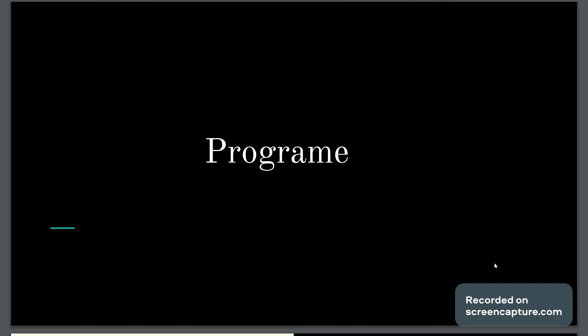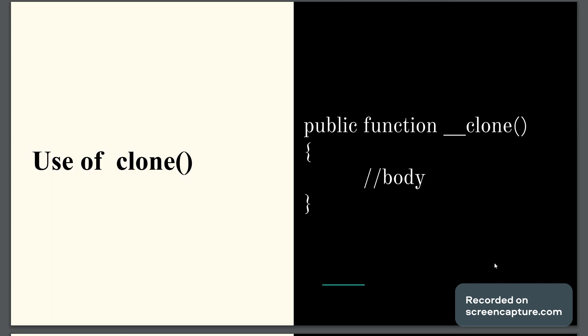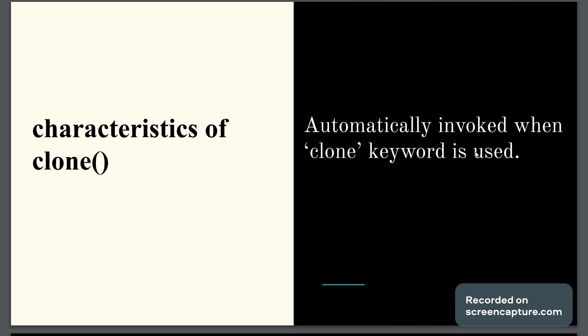Now in addition to the clone keyword, there is one special function — the double underscore clone function in PHP. The syntax is: public function __clone, and we can write the body. This is a special function because there is no need to call it using an object or class. It will be automatically called when we make use of the clone keyword in a statement. When the clone keyword is encountered during execution, it will automatically jump to the __clone function and execute its body.